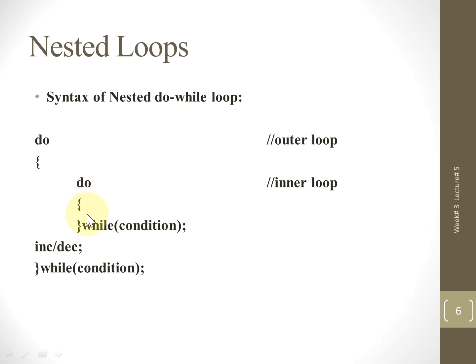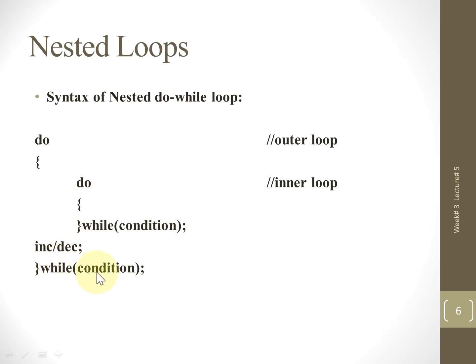The inner loop body executes again and the condition is checked again. If true, the control goes back to the start of the inner loop body. If the condition becomes false, it proceeds to the increment/decrement statement. Then the outer loop condition is checked — if true, it goes back to the start of the outer loop body and executes again with the inner loop. When the outer condition becomes false, it ends.